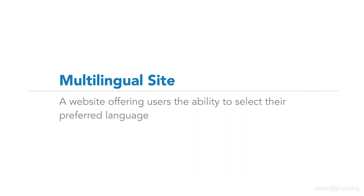A multilingual site simply offers users a choice of more than one language. Search engines have come a long way with respect to language detection, and these days you can assume they'll be able to easily pick up on the languages you have your content translated into. But no matter how smart they might be, you're still going to want to take advantage of some of the techniques to send strong signals and indicators for the language you're using on a page of content.